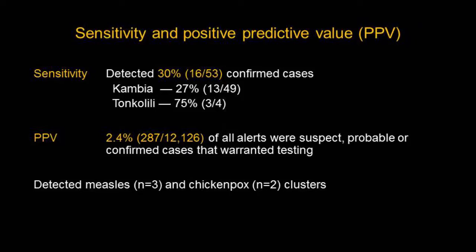For sensitivity and positive predictive value: sensitivity was 30% — the system detected 16 of the 53 confirmed cases recorded in the Ministry database across nine districts. Half of those 16 cases were alive when found. The positive predictive value was 2.4%, meaning 287 alerts produced suspect, probable, or confirmed cases that warranted further investigation. Additionally, though unintended, measles clusters were also signaled through the system.